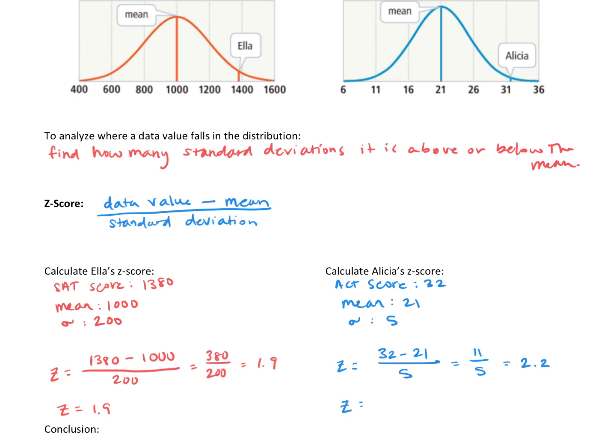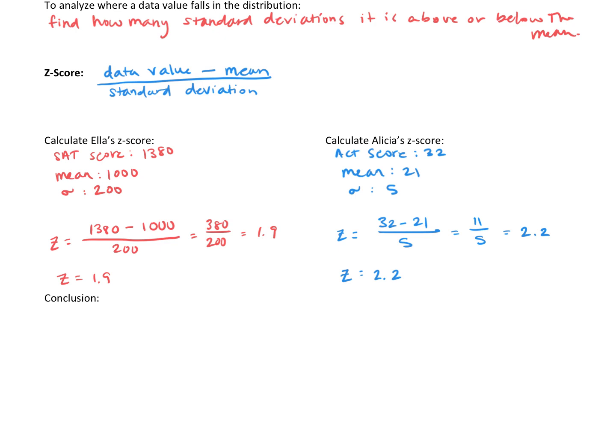This means Ella scored 1.9 standard deviations above the mean. Alicia's z-score is 2.2, so she scored 2.2 standard deviations above the mean. What's our conclusion? The person with the higher z-score has the better score. You're scoring that much more above the average of your test. So we can conclude that Alicia's z-score is better.